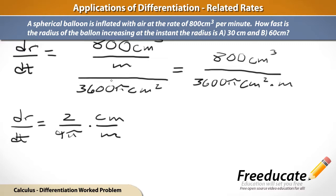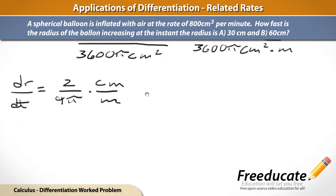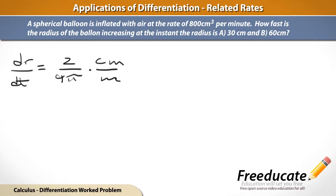But remember, the problem also asked us, at the instant that the radius of the balloon reaches 60 centimeters, at what rate is it changing then? And that's our part B. So, let's figure it out. And this is pretty easy. We just use exactly what we were given before.